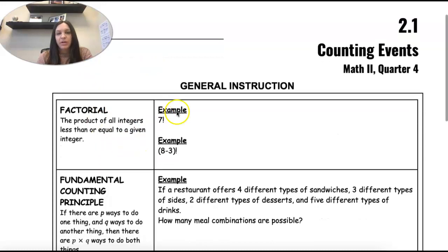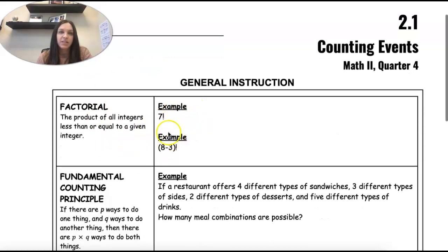But we have to start with a factorial. So we're going to see a factorial in some of our equations and formulas. So it's the product of all integers less than or equal to a given integer. Maybe you've seen this before. It's 7 exclamation point. But in math, I would say this is 7 factorial.